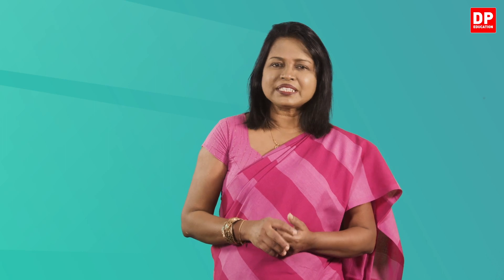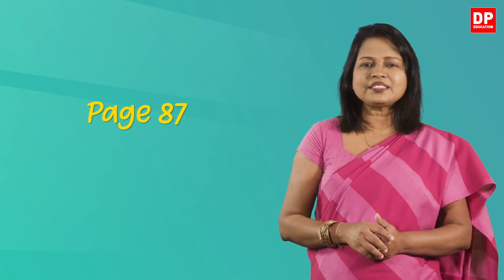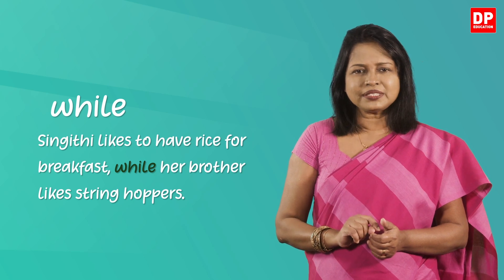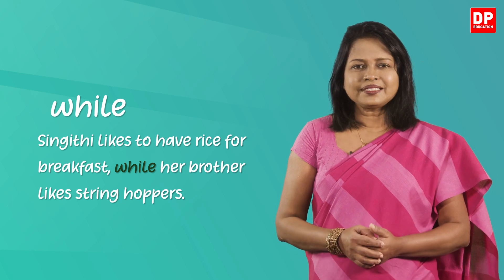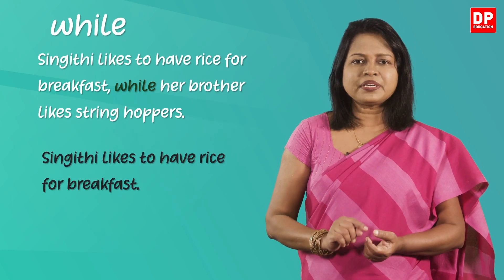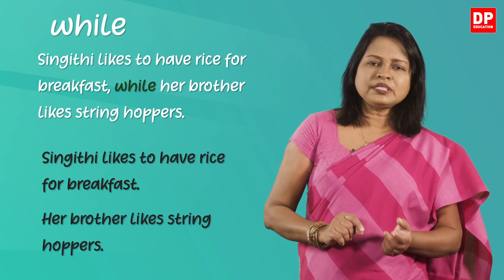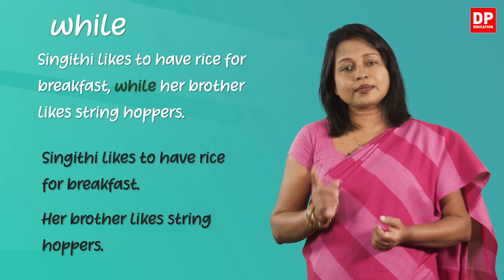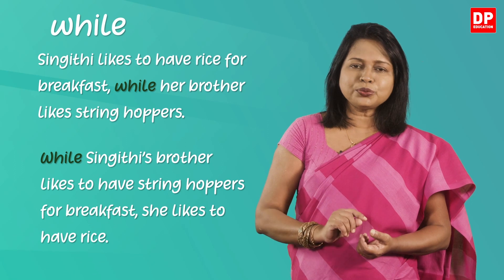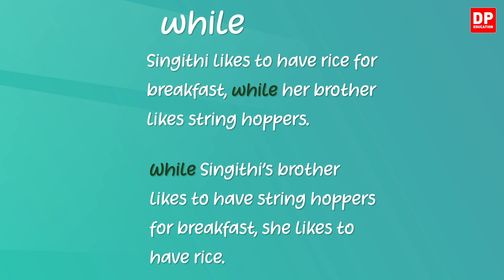There are many examples for connectives, but let's only learn the connectives which are on page 87 of your textbook. This is the first connective given there — the connective 'while' — with an example sentence. Let's read it: 'Singithi likes to have rice for breakfast while her brother likes string hoppers.' Here the connective 'while' is used to join the two sentences, comparing Singithi's preference with her brother's. You can also write this sentence another way to convey the same meaning.